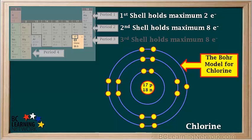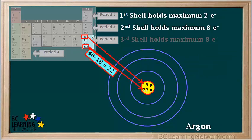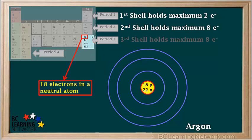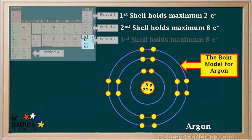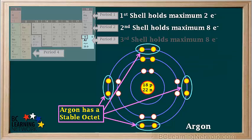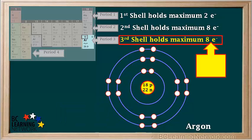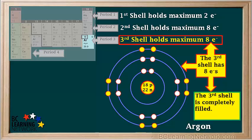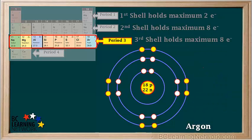Shell number 3 of chlorine has three lone pairs and one unpaired electron. The next element is argon, with 18 protons and 40 minus 18, which equals 22 neutrons in its nucleus. A neutral argon atom has 18 electrons, arranged like this. So this is our Bohr model for argon. Notice argon has a stable octet in its highest occupied shell, shell number 3. The third shell holds a maximum of 8 electrons, and argon has exactly 8 in its third shell, so it's completely filled. Therefore argon is a noble gas. This brings us to the end of Period 3 and a filled third shell.